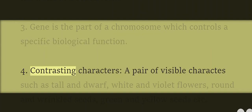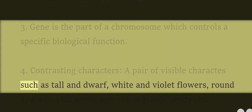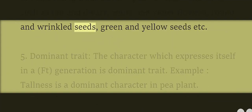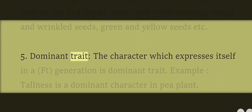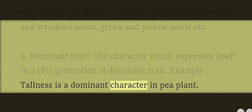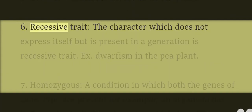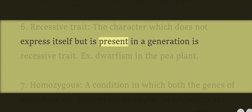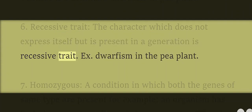4. Contrasting Characters: A pair of visible characters such as tall and dwarf, white and violet flowers, round and wrinkled seeds, green and yellow seeds, etc. 5. Dominant Trait: The character which expresses itself in the F1 generation is the dominant trait, e.g., tallness is a dominant character in the pea plant. 6. Recessive Trait: The character which does not express itself but is present in a generation is the recessive trait, e.g., dwarfism in the pea plant.